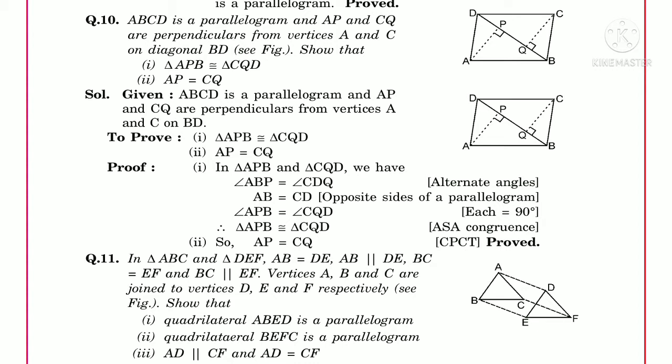Angle ABP equals angle CDQ — alternate interior angles. Secondly, AB equals CD because ABCD is a parallelogram and opposite sides of a parallelogram are always equal and parallel. Thirdly, angle APB equals angle CQD because the perpendiculars are drawn, so both angles are 90 degrees. So two angles and one side are equal, and by the Angle-Side-Angle congruence rule these two triangles are congruent: triangle APB congruent to triangle CQD.